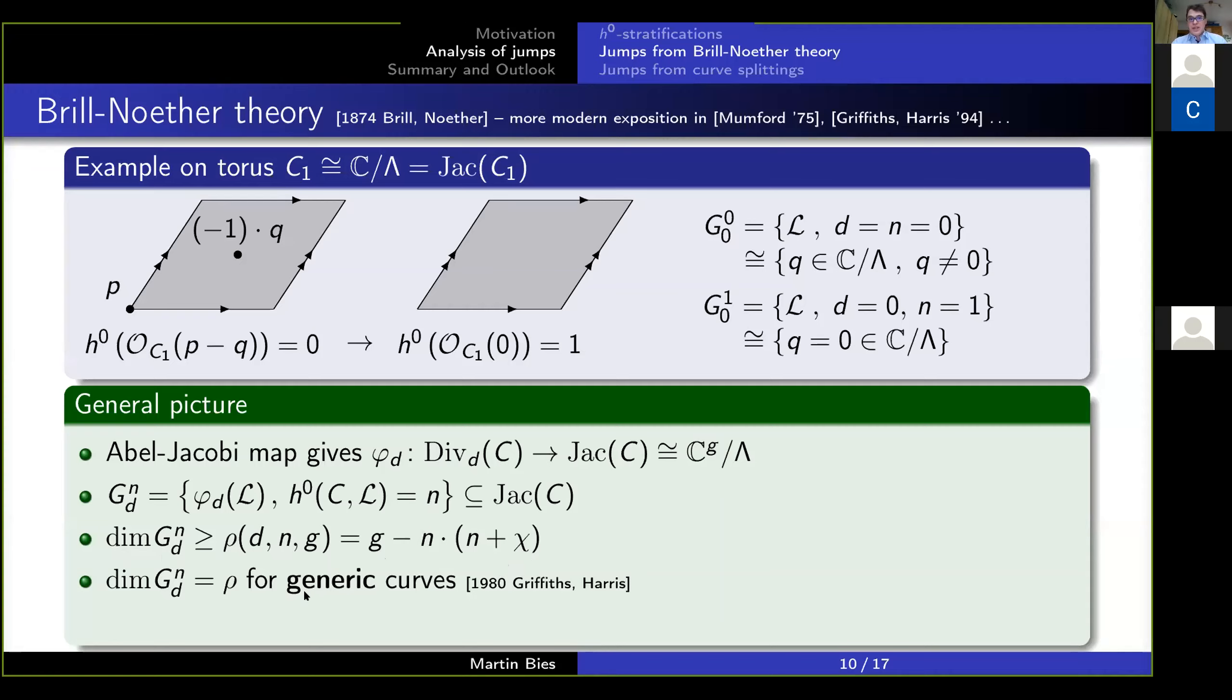Even more importantly, if you're going for generic curves, then there is a result by Griffiths and Harris which tells you that the equality here holds. So if rho is negative, the statement is there is no line bundle with that number of sections on the curve.